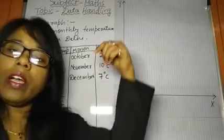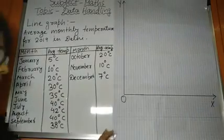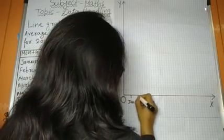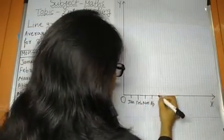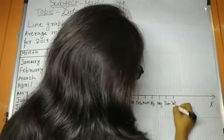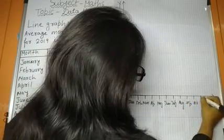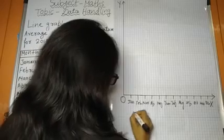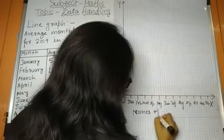Now, you have to write numbers. Numbers means average temperature on y-axis and name of month in x-axis. So, name of month first we will write here. January, February, March, April, May, June, July, August, September, October, November, and December. These are the names of months.